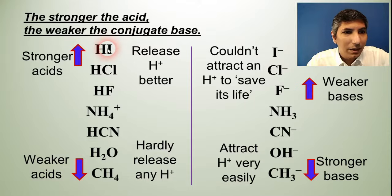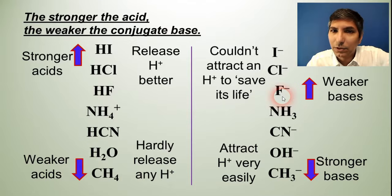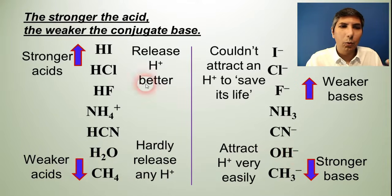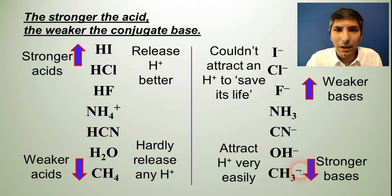And as we talk about acids getting weaker, like HF is a little bit weaker, well that means fluoride is a little bit of a stronger base. And then we start to get to some very weak acids like HCN, that means cyanide is a fairly strong base. And of course water isn't really much of an acid or a base most of the time anyway. Well hydroxide is a fairly strong base. So the weaker the acid, the stronger its conjugate base. And likewise, the stronger the acid, the weaker its conjugate base.